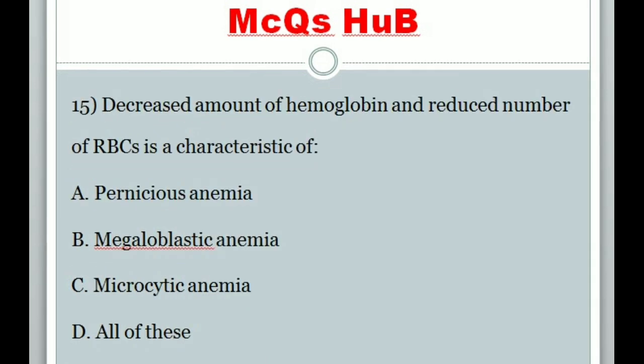Question 15: Decreased amount of hemoglobin and reduced number of RBCs is a characteristic of? Answer C: Microcytic anemia.